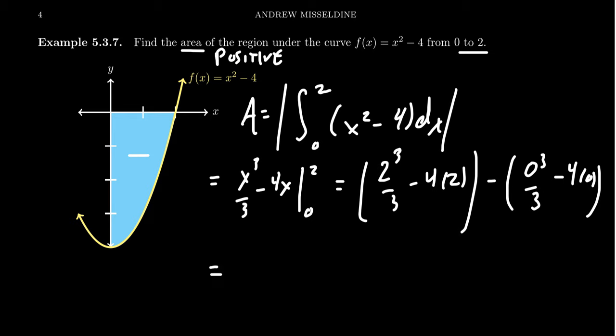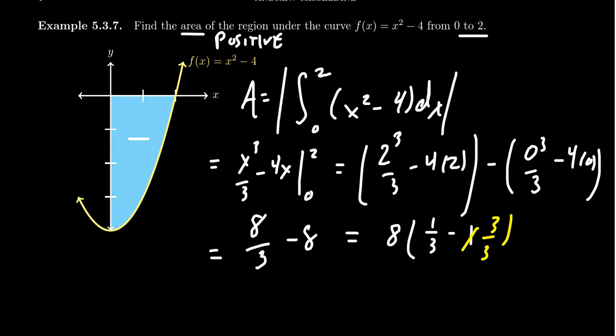Now, continuing on with the arithmetic, we'll get 2³, which is 8, 8 over 3. 4 times 2 is also an 8. If you factor out the 8, you're left with 1/3 - 1, which you might prefer to write as 3/3.